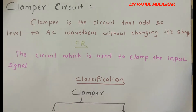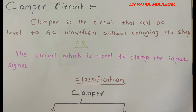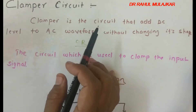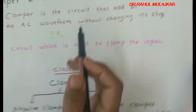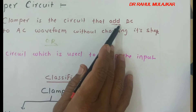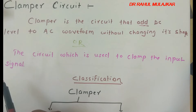Hello, in this video we will see the clamper circuit in detail. In last lectures we saw the construction of diodes and applications of the diode. The main application of the diode is the clamper, as the diode can clamp input AC signals. A clamper is a circuit that adds a DC level to the AC waveform without changing its shape.